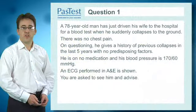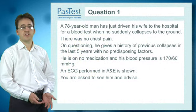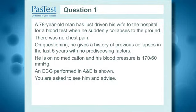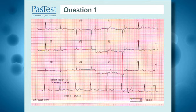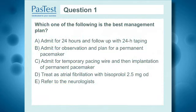Question one: a 78-year-old man has just driven his wife to hospital for a blood test when he suddenly collapses to the ground. There was no chest pain. On questioning, he gives a history of previous collapses in the last five years with no predisposing factors. He's on no medication and his blood pressure is 170 over 60 mmHg. An ECG is performed in A&E. You're asked to see him and advise. Which one of the following is the best management plan?